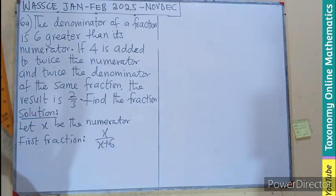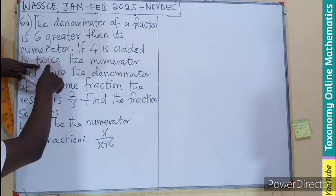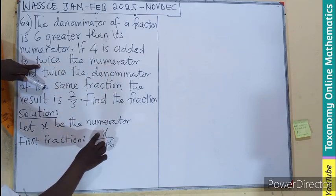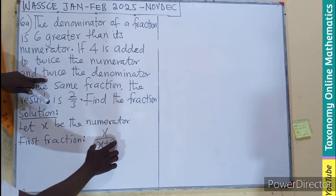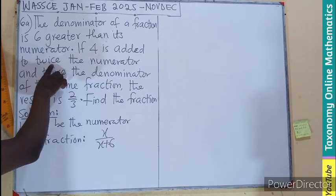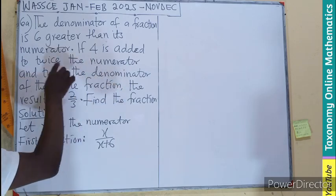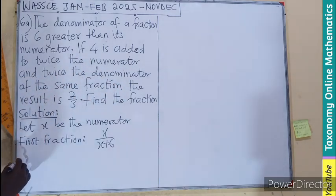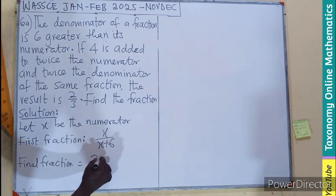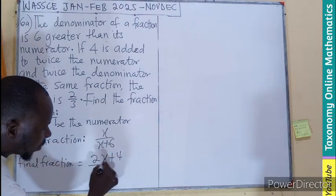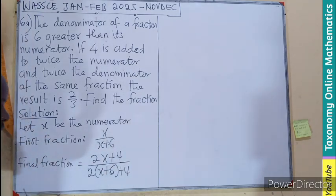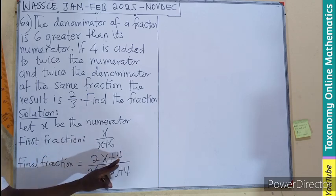Now, 4 is added. We're going to add 4. It's added to twice, so first of all, we need to multiply twice the numerator - two times, we add 4 to that. Twice the denominator, we add 4 to that. If 4 is added to twice the numerator and twice the denominator, this is going to be our final fraction.